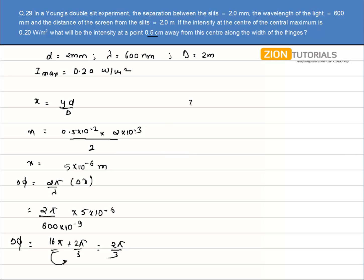I can calculate the intensity at this point because intensity is given by I_1 plus I_2 plus 2 under root of I_1 I_2 cos of φ. Now let's say the intensity will be the same at the two slits, it will be I_0, so it will be I_0 plus I_0 plus 2 I_0 cos of 2π by 3.